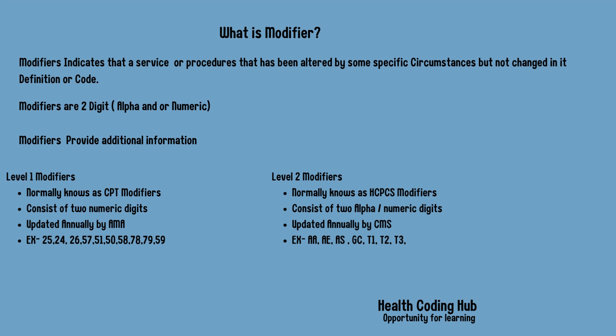Basically, modifiers are two digits — sometimes they will be alpha, meaning alphabets like A, B, C, D, and sometimes they will be numeric, meaning numbers like 1, 2, 3, 4. Modifiers provide additional information but do not change the meaning or definition of any procedure or any E&M code.